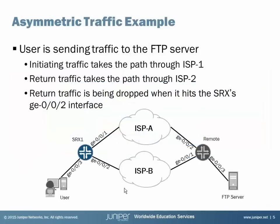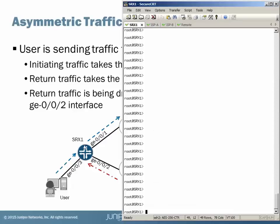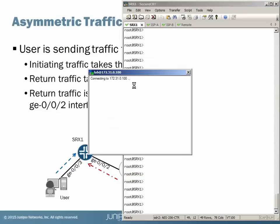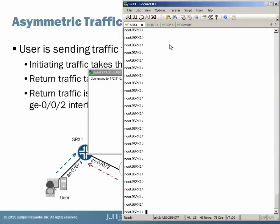Let's jump to an example. This is the same illustration with a bit more detail, showing the interfaces so we can track them. We're going to see initiating traffic take the path through ISP-A, then return traffic take the path through ISP-B — it gets dropped at first, and then we'll adjust the zones to fix it. Here's the CLI for SRX1, the local router for the user. Let's open an FTP session to the remote FTP server using the default FTP port. It's not working, and that's expected — we need to fix it.